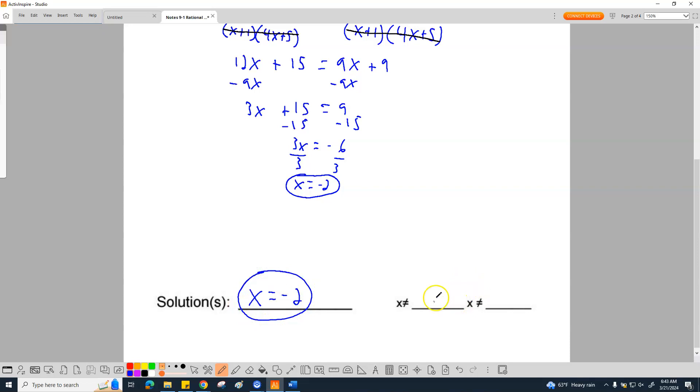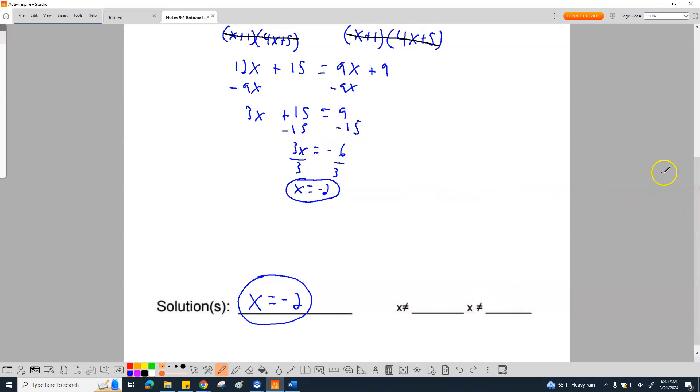Now, that's what it does, but check out what we have. We found x equals negative 2 for our actual solution. But, we have this thing down here that says x cannot equal, x cannot equal. Why do I have these two blanks here? There is a rule. I'm going to show you. 0 over 1 equals 0. 1 over 0, these are just random fractions, equals undefined. You can never have a 0 in the bottom. If you do, it breaks.